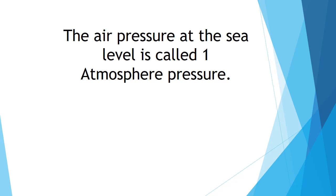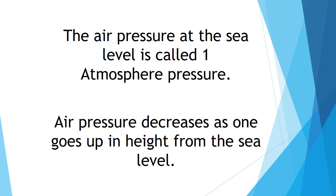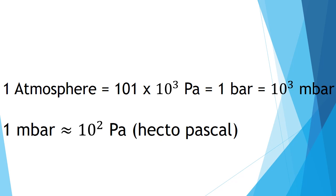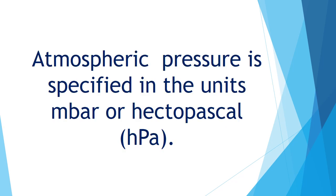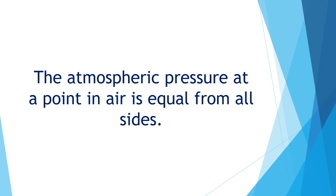The air pressure at the sea level is called 1 atmosphere pressure. Air pressure decreases as one goes up in height from the sea level. 1 atmosphere is equal to 101 into 10 raise to 3 Pascal is equal to 1 bar is equal to 10 raise to 3 millibar. 1 millibar is equivalent to 10 raise to 2 Pa. Atmospheric pressure is specified in units millibar or hectopascal. Atmospheric pressure at a point in air is equal from all sides.